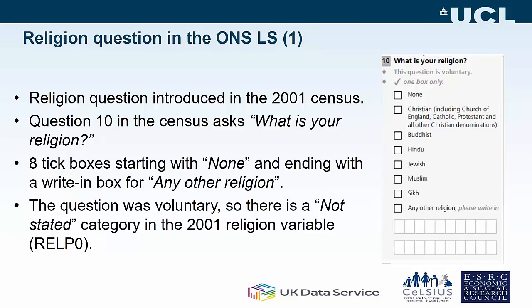It might be that people who write Catholic are more regular churchgoers and staunch believers, or equally it could be that they read the question, saw the text box at the bottom and completed it without looking at anything in between. Similarly, there are people who write 'atheist' rather than ticking none, though this is less clearly a subset of none than Catholic is a subset of Christian. Since the question was voluntary, none of the values are imputed.